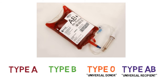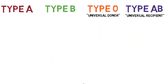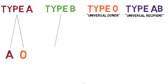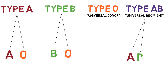Ultimately, if you are type A, you can receive either A or O blood. If you are type B, you can receive either B or O blood. If you are type AB, you can receive type A, B, O, or AB blood. And if you are type O, then you can only receive other O type blood.